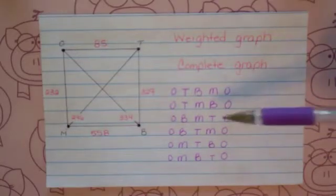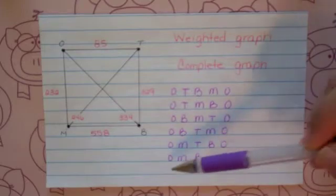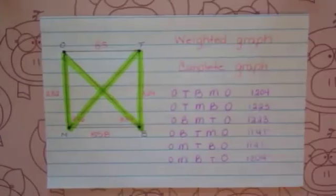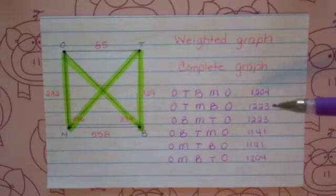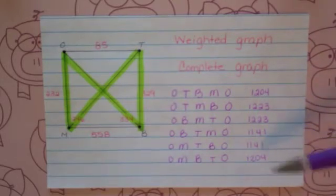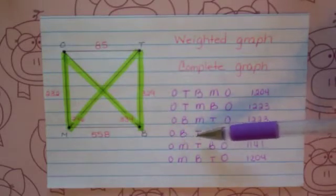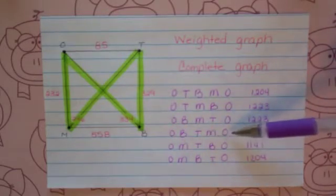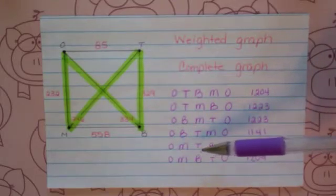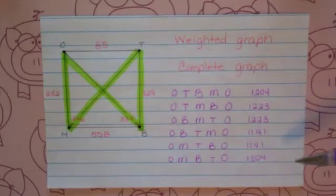I want you to fill in how much each one of these distances is. Go ahead and pause right now and add up the distance on each one. Hopefully by now you've noticed the pattern: two of these should always add up the same because they are the same path but in reverse. For example, one went from Orlando to Bonifay to Tampa to Miami to Orlando, and the other was exactly in reverse — Orlando to Miami to Tampa to Bonifay to Orlando.